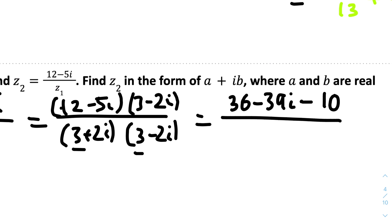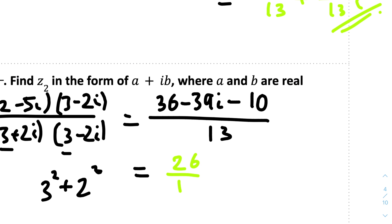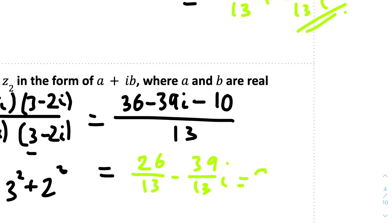For the denominator, using the speed tip: a = 3, so 3² + 2² = 9 + 4 = 13. Therefore we simplify: the real part is 26/13 = 2, and the imaginary part is -39i/13 = -3i. So z₂ = 2 - 3i, which is the final answer.